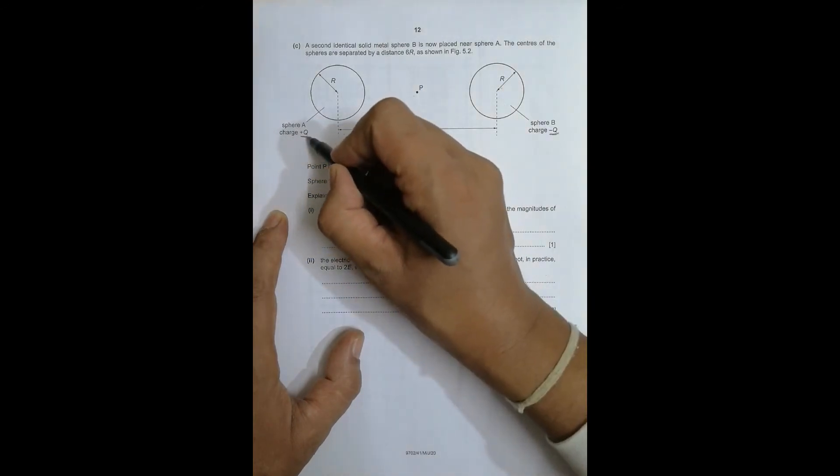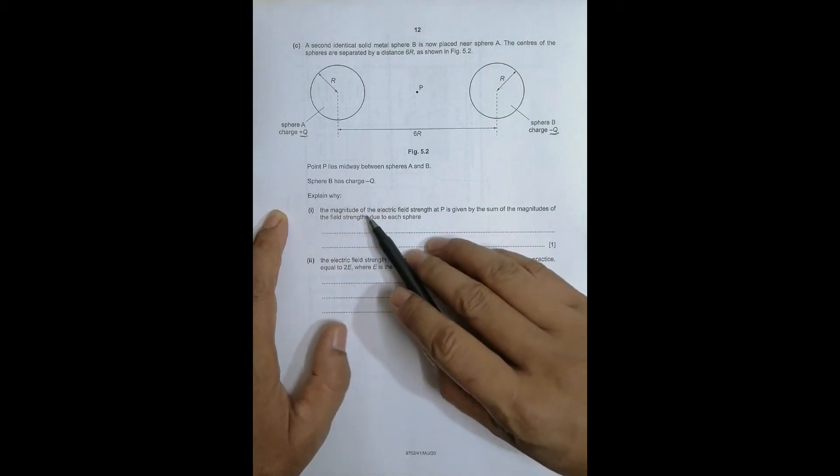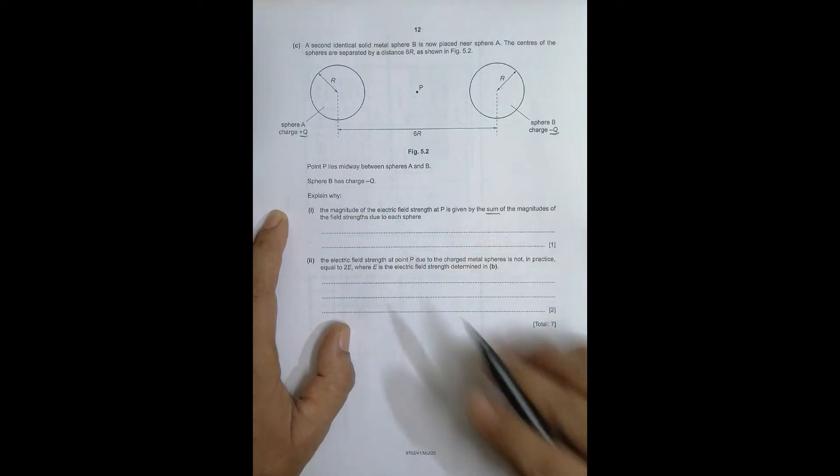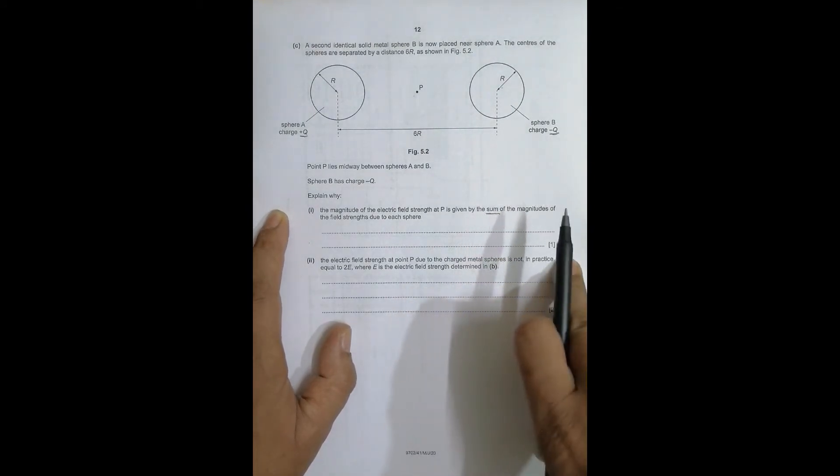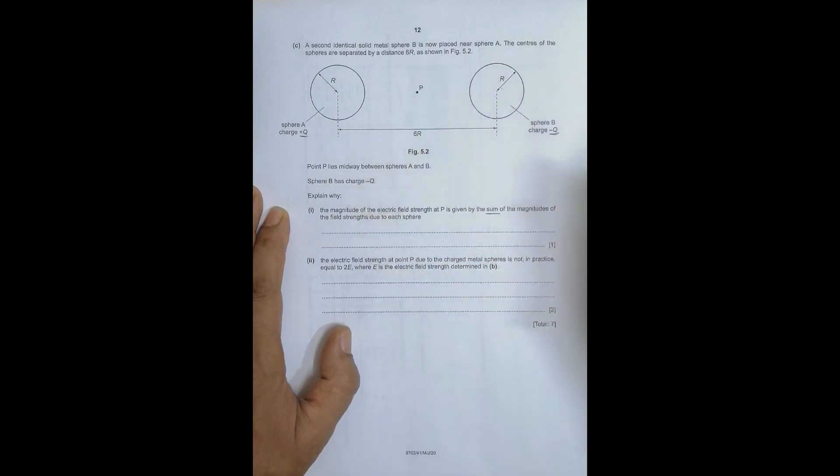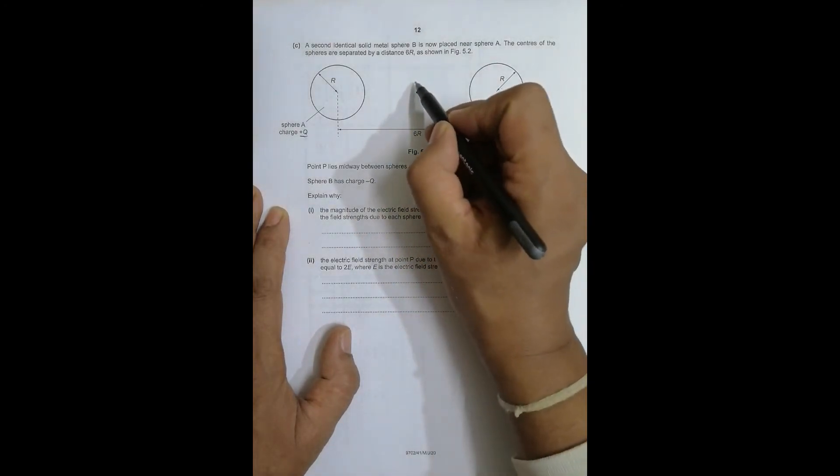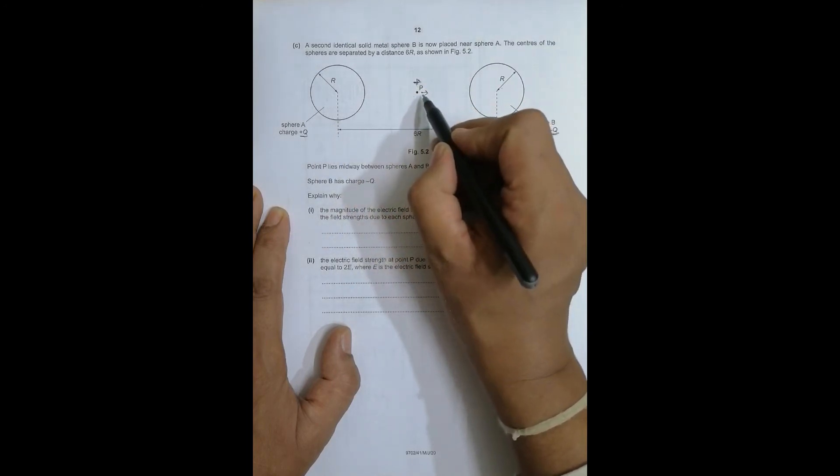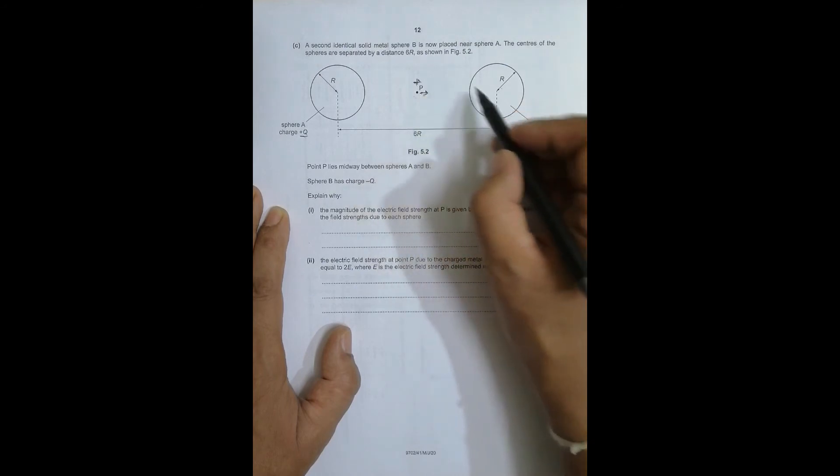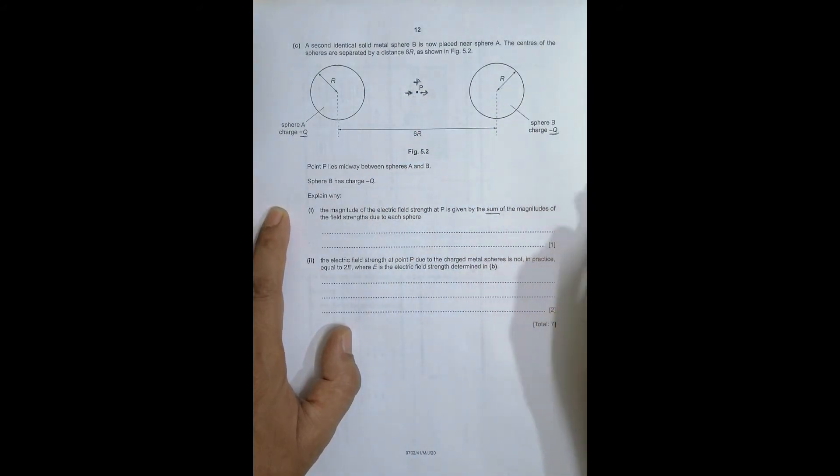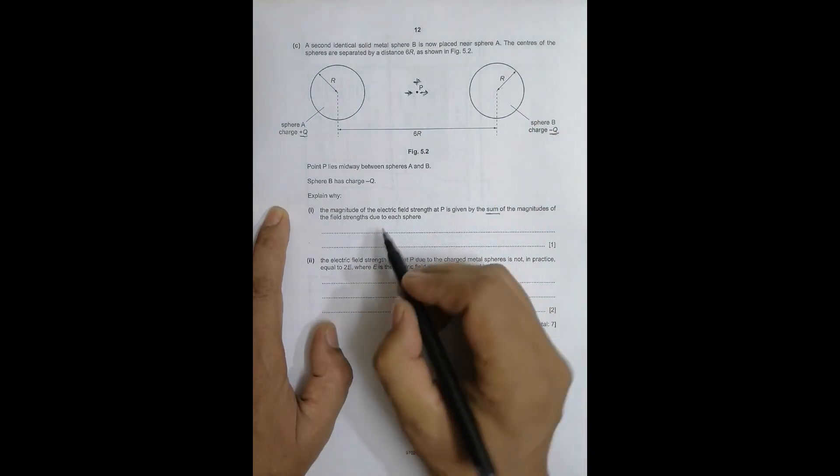Explain why the magnitude of the electric field strength at P is given by the sum of the magnitudes of the field strengths. When we consider electric field, we use a positive test charge which is stationary. This positive charge will be repelled by the positive sphere, so the field is to the right. Similarly, this positive charge will be attracted by the negative sphere, so the field is also to the right. Since one is positive and one is negative, both fields are in the same direction to the right, so we add them.